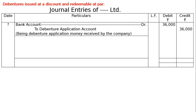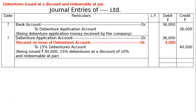The discount is 10 percent, that is 40,000 into 10 percent equals 4,000. Out of 40,000, if we subtract the discount of 4,000, we will be getting 36,000. So the debenture application account is debited with 36,000.